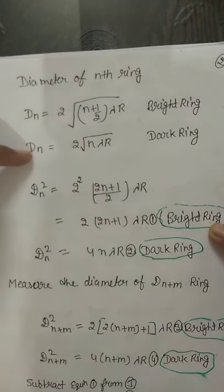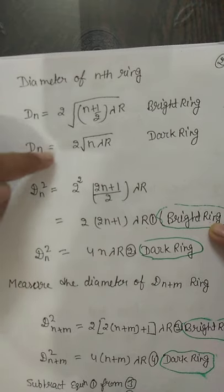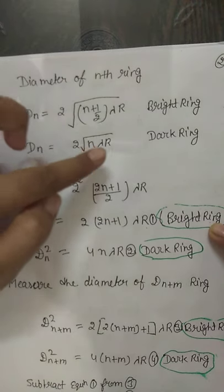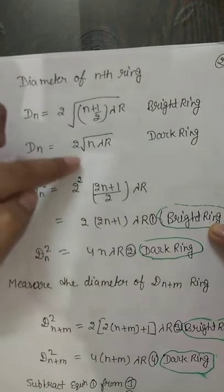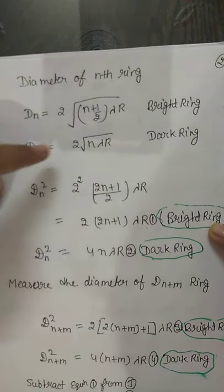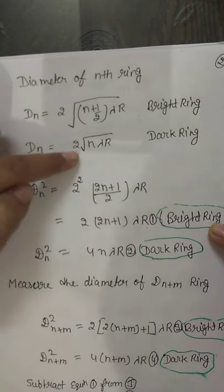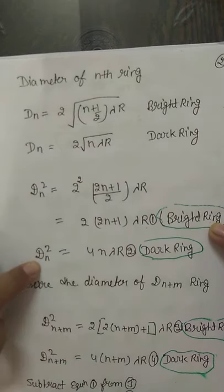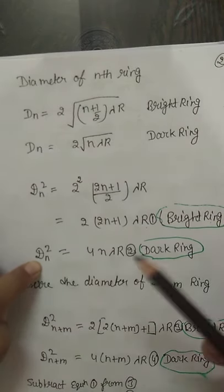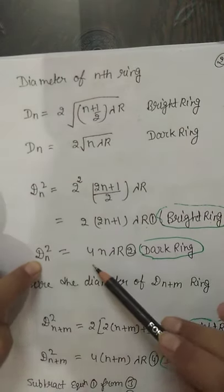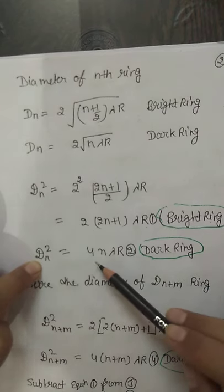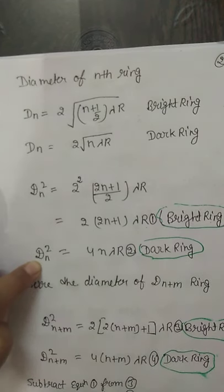Similarly, the dark ring equation gives D_n = 2 × sqrt(n × lambda × R). Squaring it, D_n squared for the dark ring equals 4n × lambda × R.